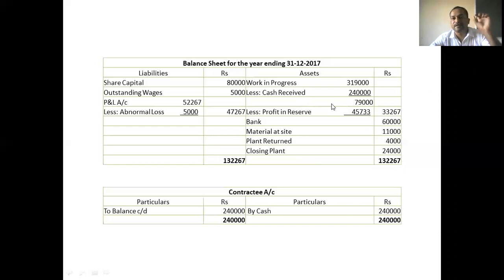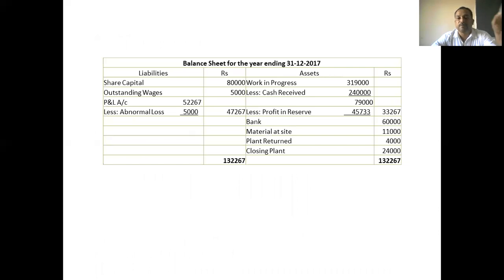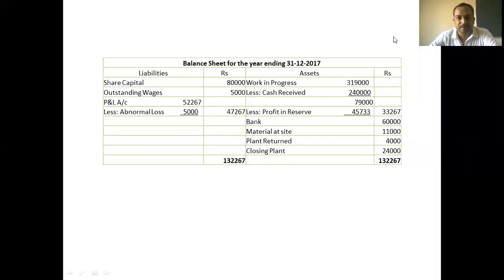This completes the 15-month contract problems. The main calculations are: closing plant calculation, work certified calculation, national profit transfer to P&L account, and balance sheet preparation. There is no problem in preparing the contract account if you follow the trick.